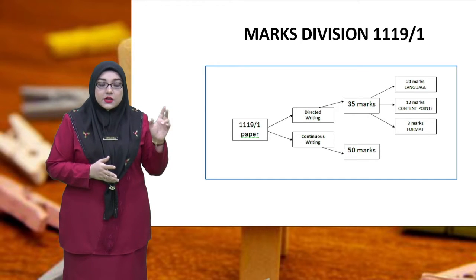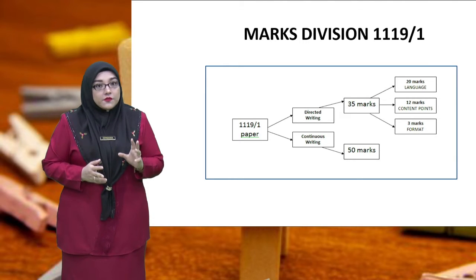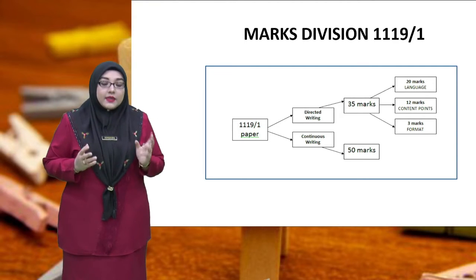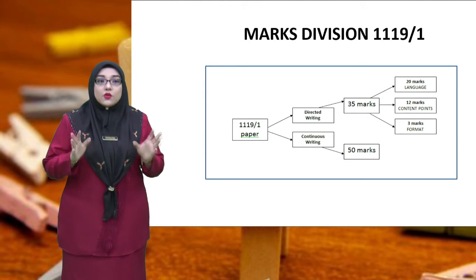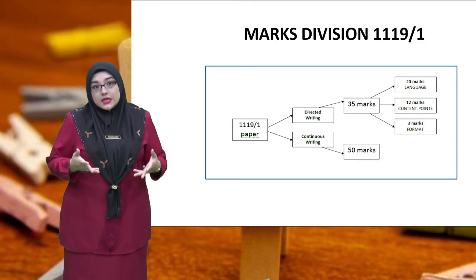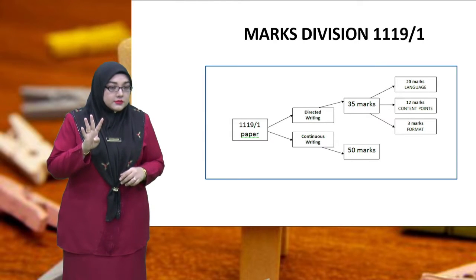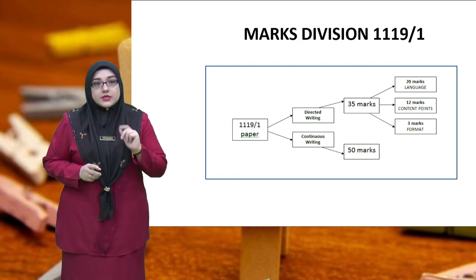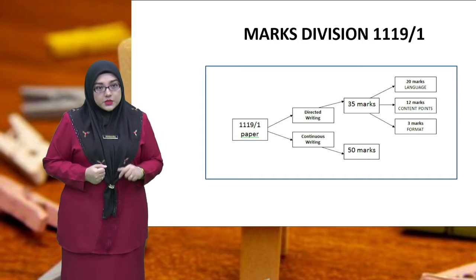The 35 marks for DW consist of three aspects. The first aspect is language — you will be given up to 20 marks. For content points, there are 12 content points which carry 12 marks. For format, you will be given 3 marks. However, sometimes not all questions provide all 12 content points. For example, if the question gives only 8 content points, you need to come up with 4 additional content points of your own. Please bear in mind that you need a total of 12 content points to be awarded the full 12 marks.